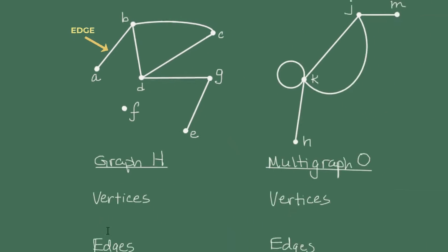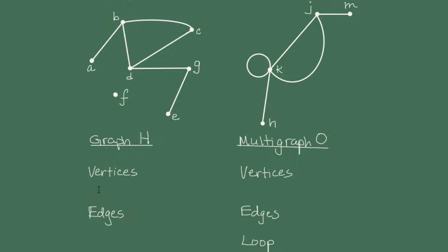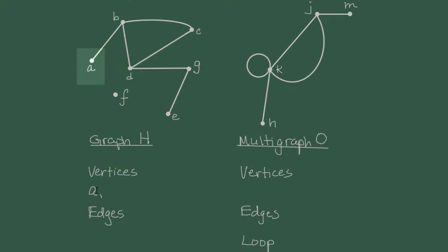For example, in graph H, we have the vertices A, B, C, D, E, F, and G.